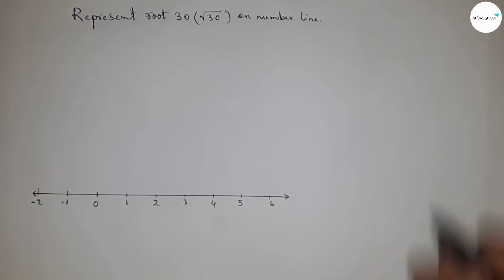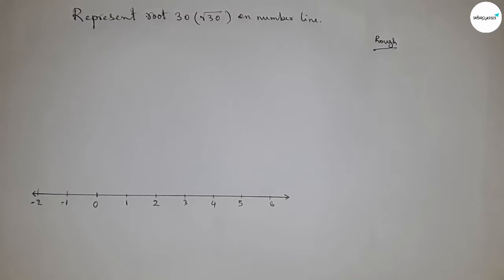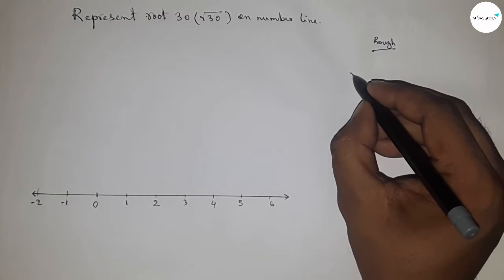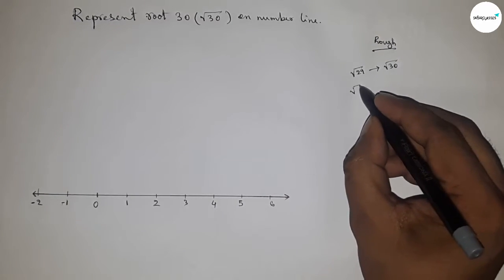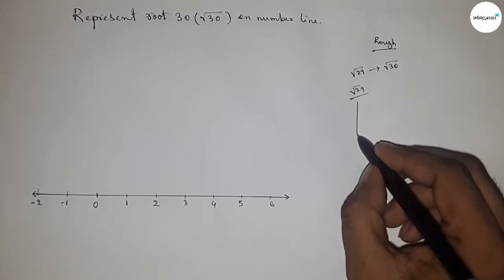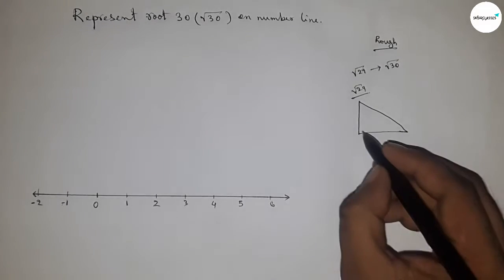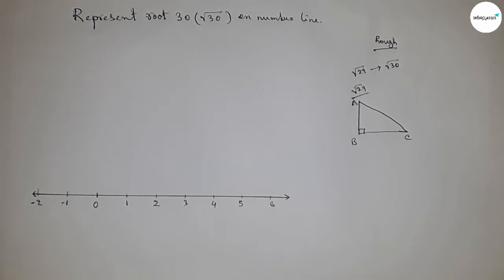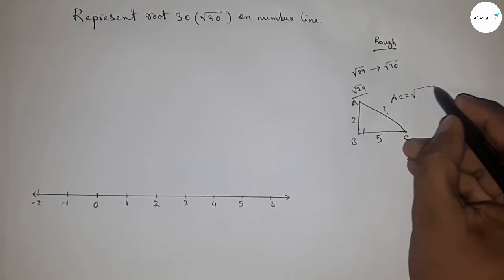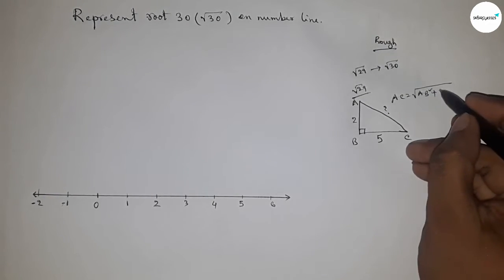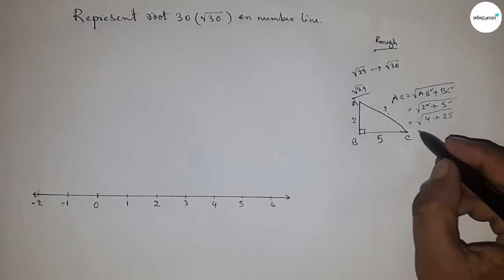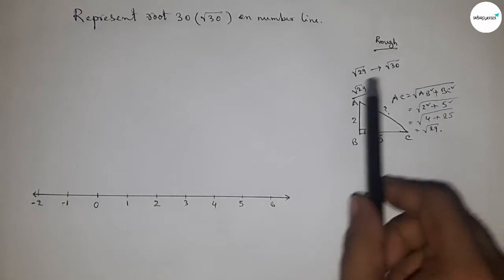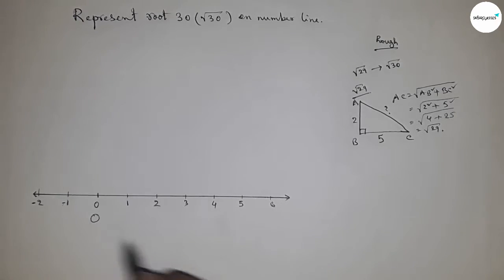On the other side: minus one, minus two and so on. Now roughly discussing the calculation. To represent root 30, we first need to represent root 29. If there is a right angle triangle ABC with base five and height two units, then by Pythagoras theorem, hypotenuse equals root over base squared plus height squared — that is root of 4 plus 25, which is root 29.